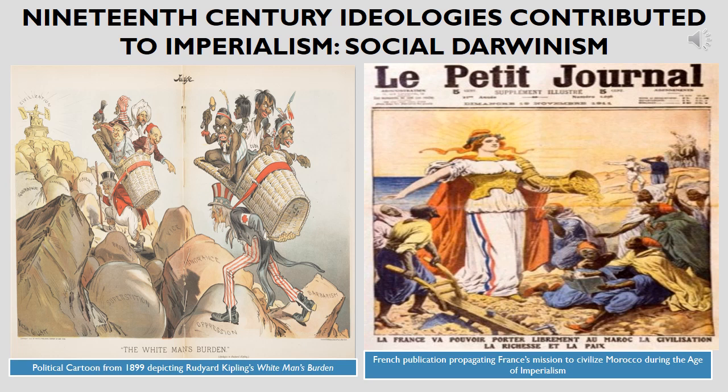Nonetheless, social Darwinism's contribution to the imperialists' views of their own racial, biological, and cultural superiority led to a great diffusion of their religions, languages, and lifeways into Asian, African, and Oceanic societies. Those indigenous populations oftentimes witnessed their own religions, languages, and lifeways replaced.